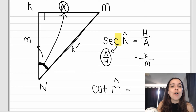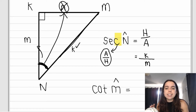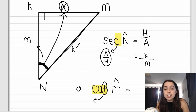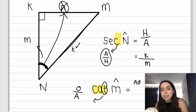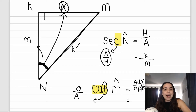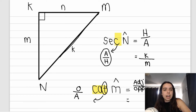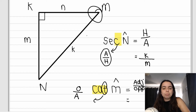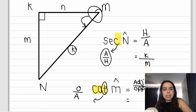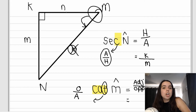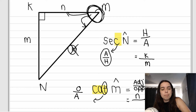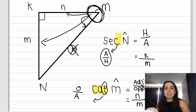Let's do cot of M. Now remember cot - the third letter is T - so I'm doing the reciprocal of tan. Tan originally is opposite over adjacent, so I'm looking for adjacent over opposite - the reciprocal. Let's look at angle M over here. Adjacent to angle M means next to it. It can't be K because K again is the hypotenuse and I'm not caring about the hypotenuse. So adjacent would be N. So it's little N over opposite. Opposite angle M is baby M. And that's it.